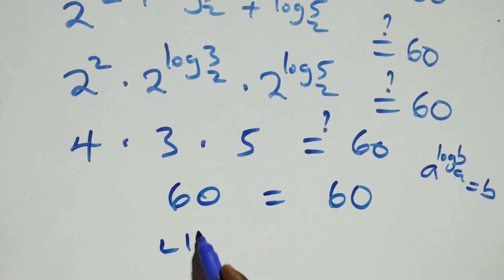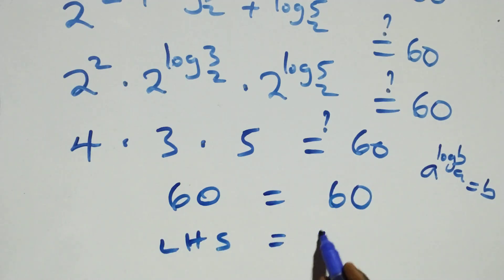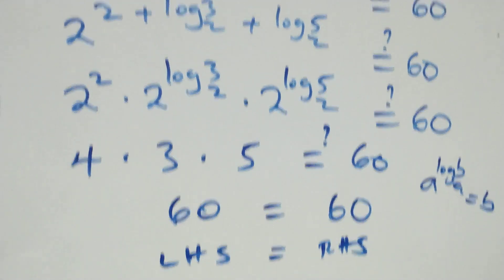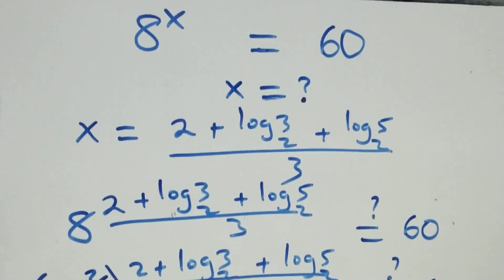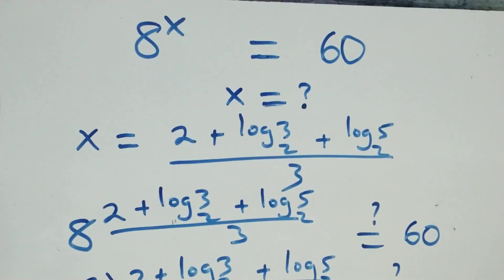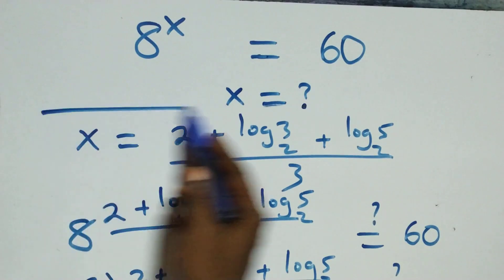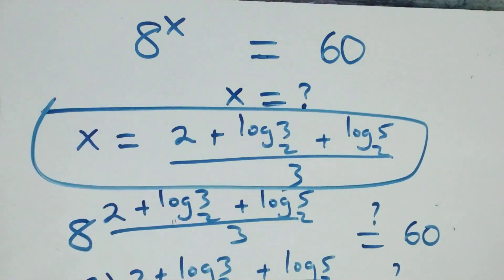Therefore we conclude that x equals (2 + log₂3 + log₂5) over 3 satisfies the given problem. Thank you for watching. Don't forget to subscribe for more videos, turn on the notification bell, share this video, give a thumbs up, put your comments, and see you in the next class. Bye for now.